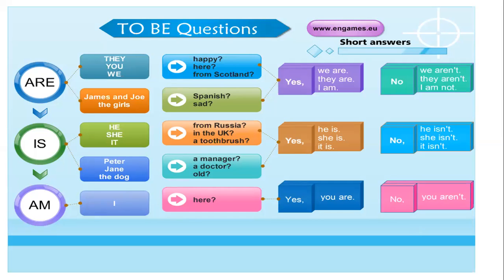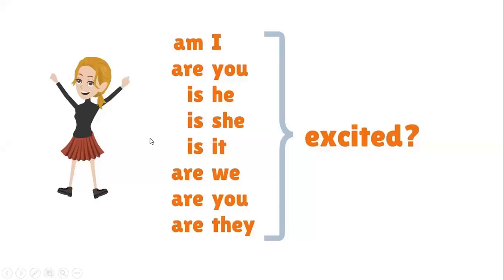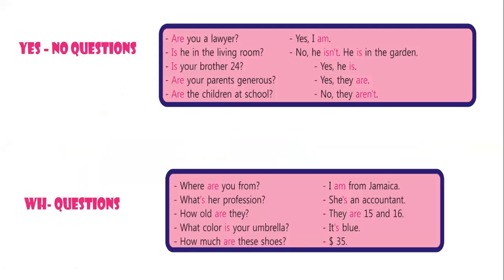Let's continue. This is an example conjugated with all the subject pronouns in question form: Am I excited? Are you excited? Is he excited? Is she excited? Is it excited? Are we excited? Are you excited? Are they excited? So you see am, are, is, are — then the subject pronoun, then the complement. Here we have more examples of yes/no questions.